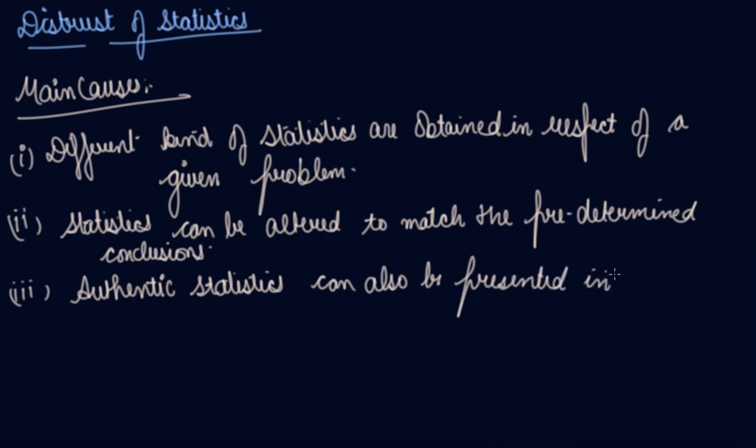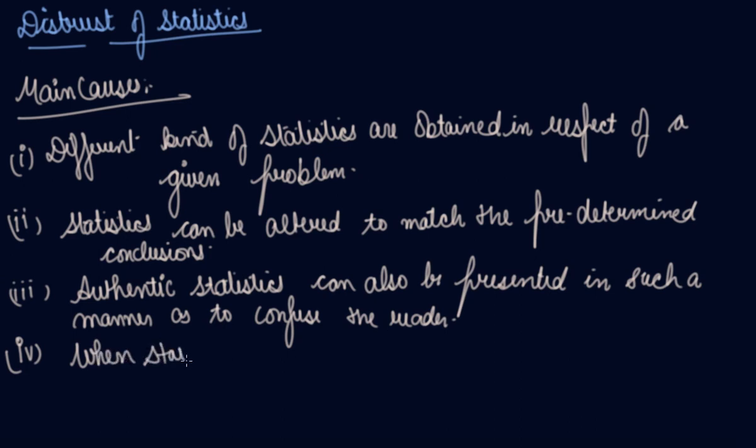Fourth: when statistics are collected in a partial manner, the results are shown to confuse the reader. Consequently, people lose faith in them when you collect half of the statistics and rest of the data you collect on estimation.